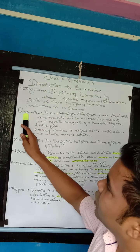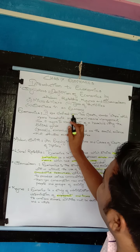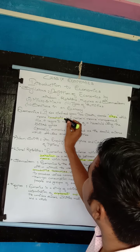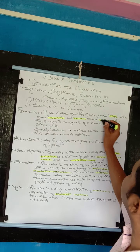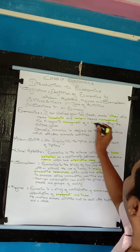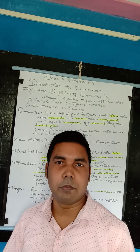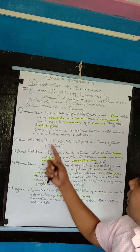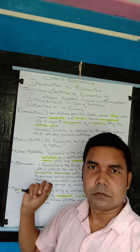Let me explain once more. Economics is derived from two Greek words: 'oikos,' which means household, and 'nemen,' which means management. Thus it refers to management of a household using limited fund. Limited fund means whatever money or wealth you have — with that only you have to manage. Economics is defined as the social science that studies economic activities.